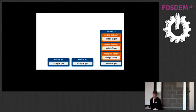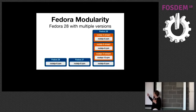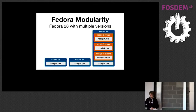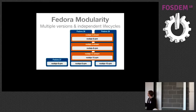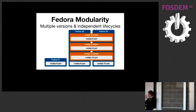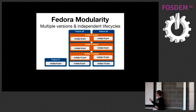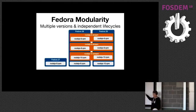With modularity, in Fedora 28 we introduced so-called modules. They give you a choice of version. When a new release comes in, you can keep your chosen version. It's not portable binaries — it's a different binary with the same promise. So Node.js 10, Node.js 8 — whatever you want, you can have.